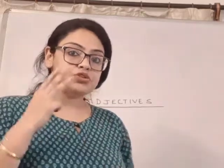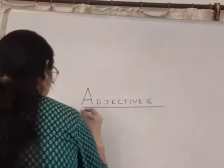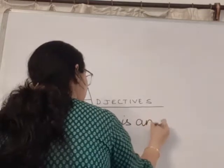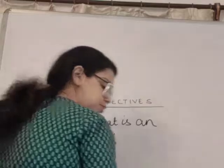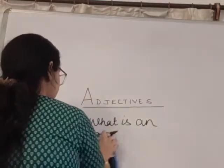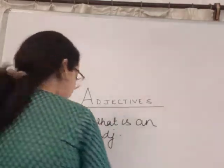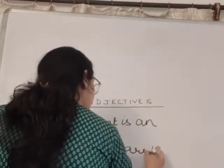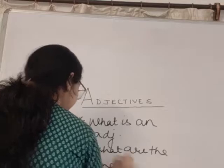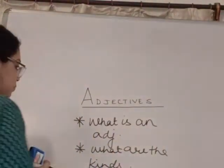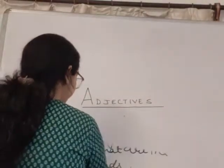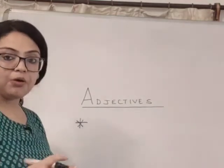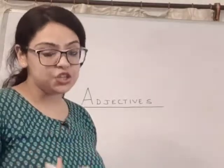Today in this lesson I am going to tell you three things. The first thing would be what is an adjective. The second would be what are the kinds. And I will also tell you about the different errors that students make while using an adjective in their sentence.